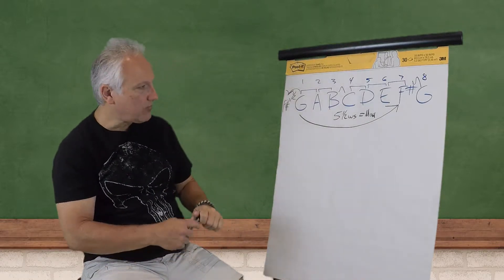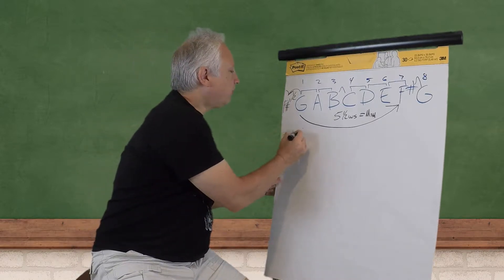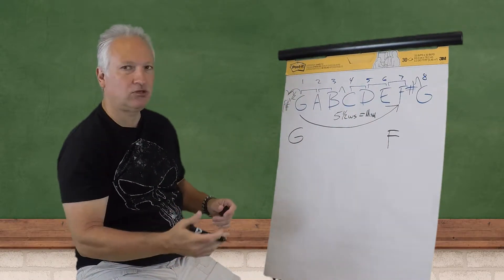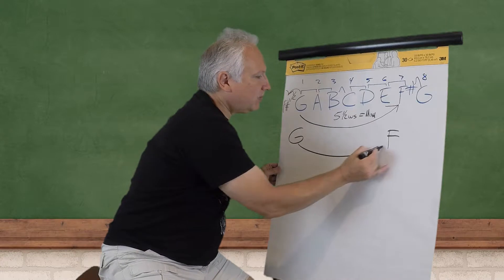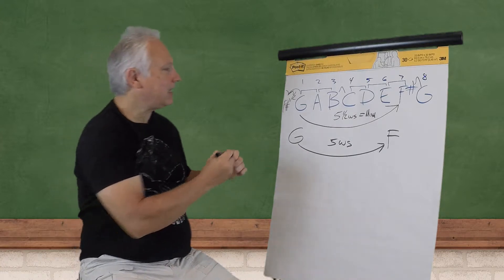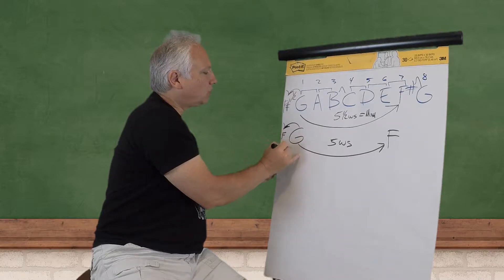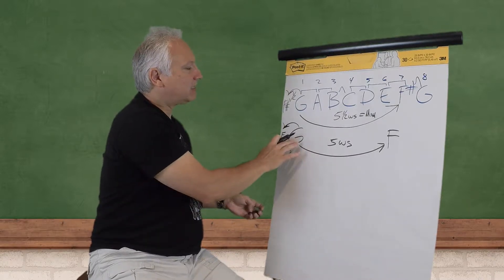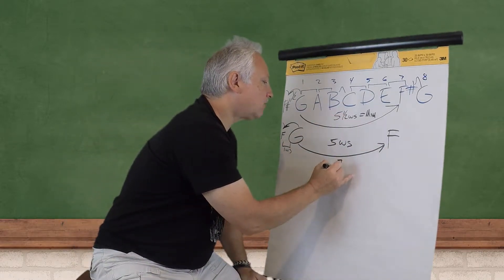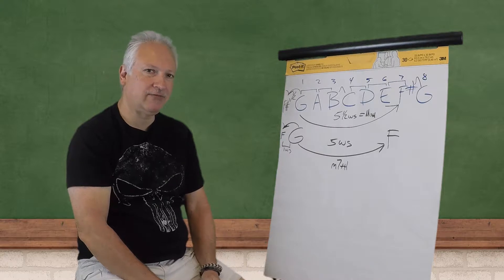The other seventh interval we're interested in is a minor seventh. An example would be going from G to just an F note — not what you'd find in this particular scale, but in other scales you would. That distance is only five whole steps. Using the shortcut again: if we look behind the root note and the previous note is a whole step back — like F, a whole step — then the next F above G would be five whole steps. That's a minor seventh interval, written with the m smaller than the seven.